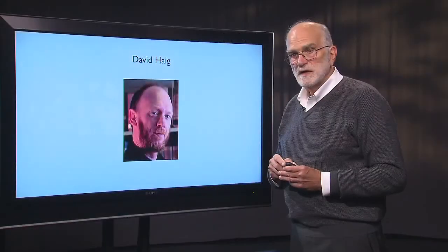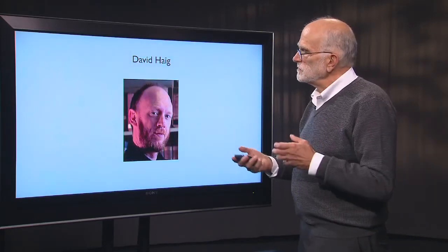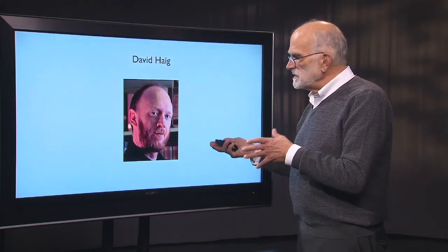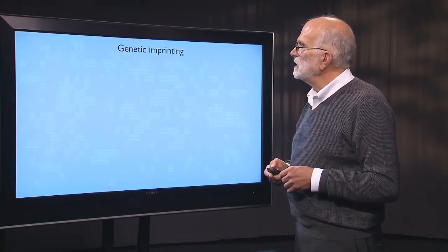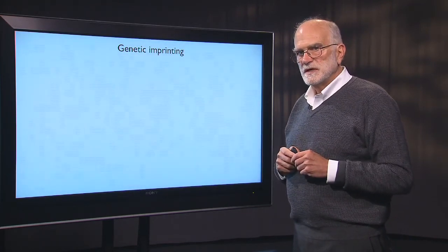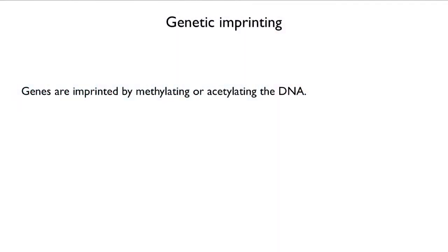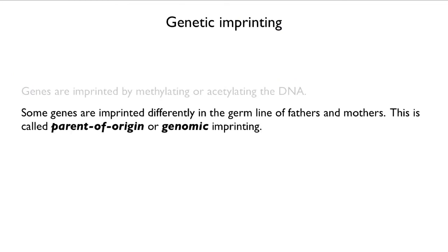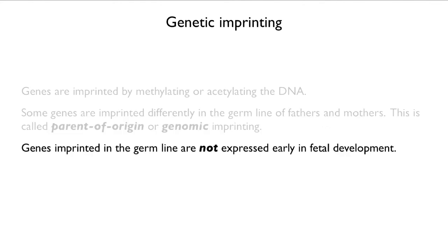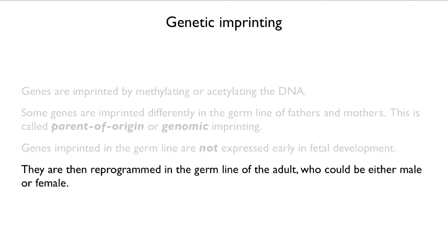The man who had this idea is David Haig, a professor at Harvard who picked up the torch from Trivers — who had gotten it from Hamilton — and applied these ideas in the early 1990s. David also noticed a connection to genetic imprinting. Genes are imprinted by being methylated or acetylated, which essentially turns the gene off. Some genes are imprinted differently in the germline of fathers versus mothers — this is called parent-of-origin or genomic imprinting — and those genes are not expressed early in fetal development.